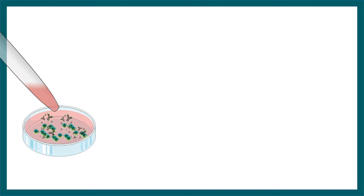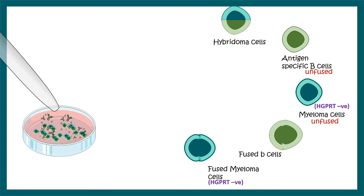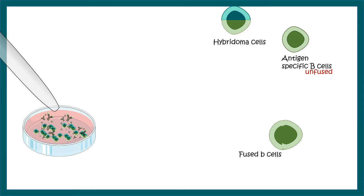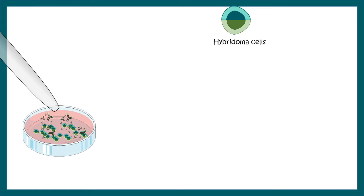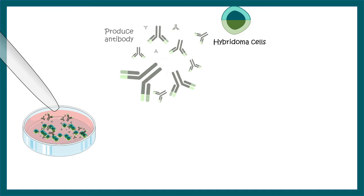Let us review all cell types generated after fusion: hybridoma cells, fused myeloma cells, fused B cells, unfused myeloma cells, and unfused B cells. The HGPRT-negative population — myeloma cells and fused myeloma cells — will both die eventually. We are left with hybridoma cells, antigen-specific B cells, and fused B cells. Since the B cells are not immortal, they will eventually die after a few weeks, leaving us with hybridoma cells only.